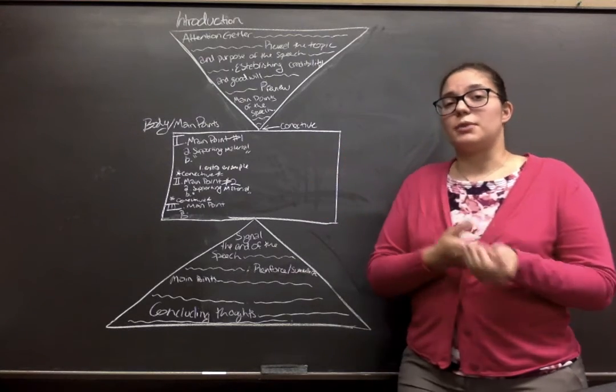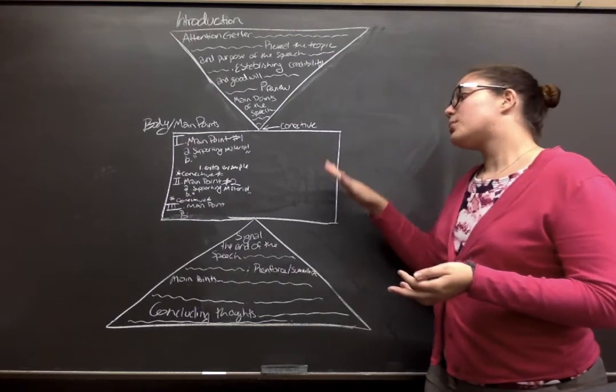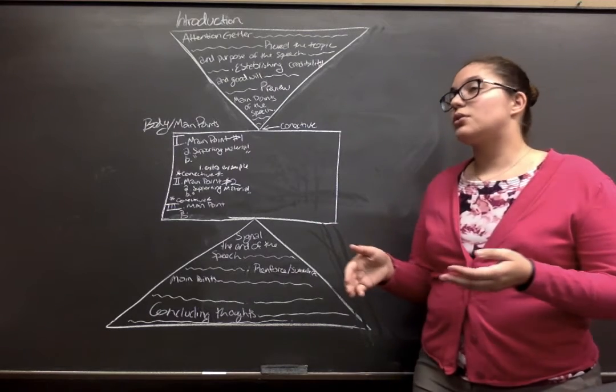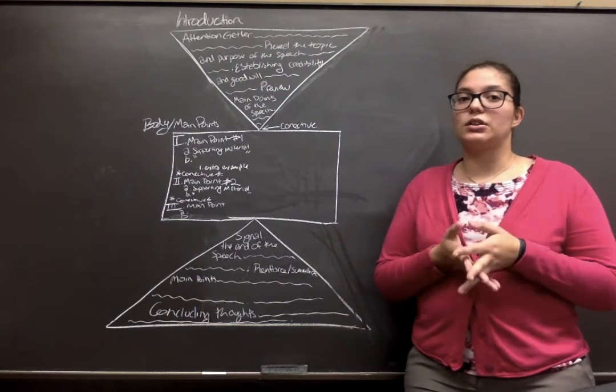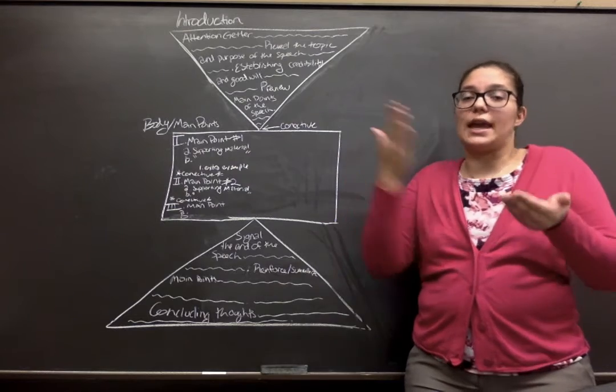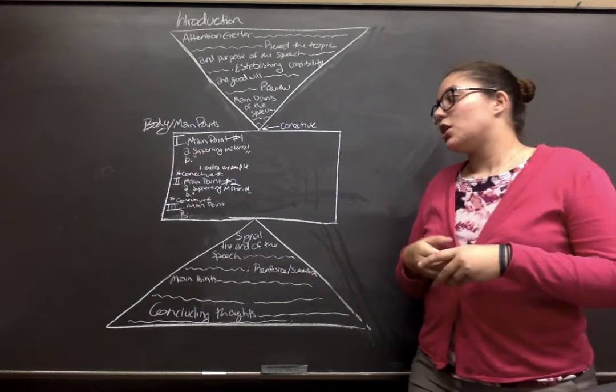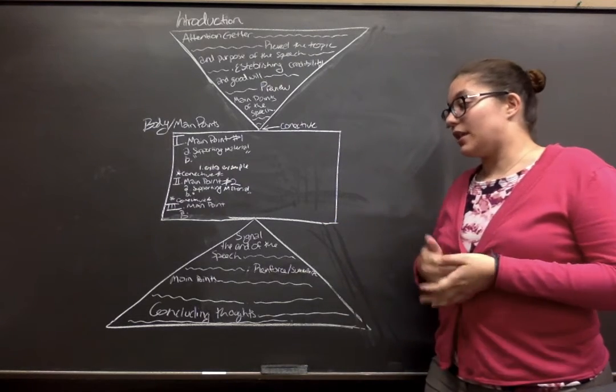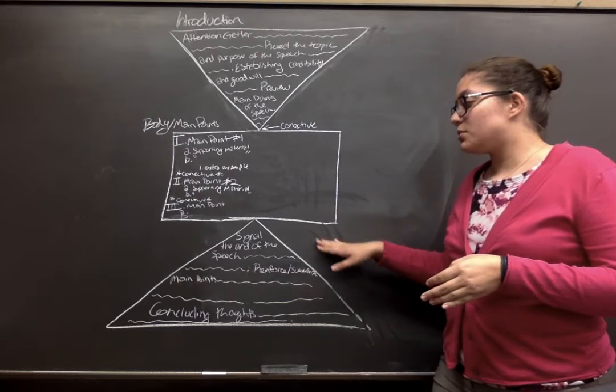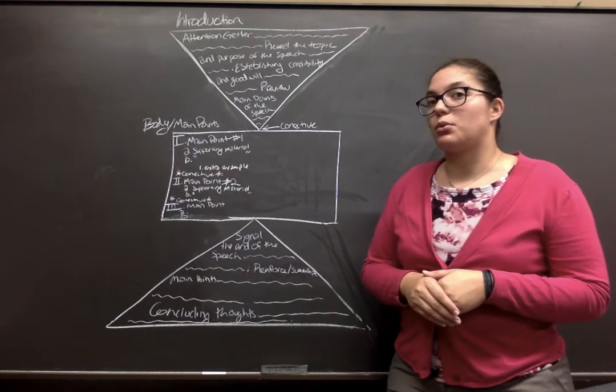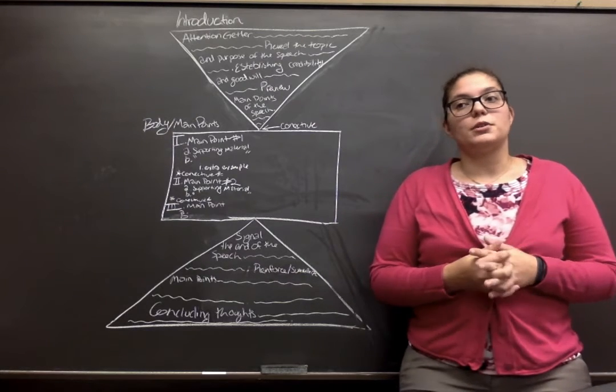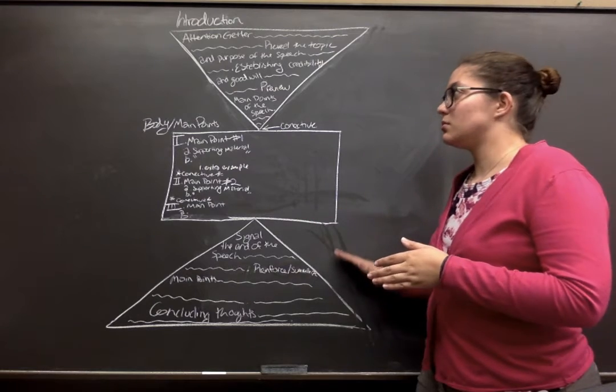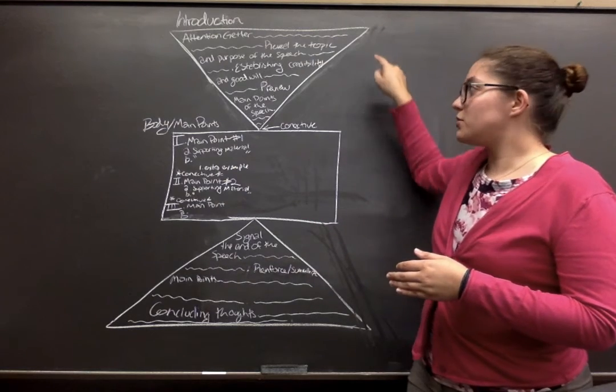After we've talked about the body and the main points, we're going to go to your conclusion. So the way you start your conclusion is first you've got to signal the end of the speech. Once you have done that, you want to reinforce or summarize your main points. So you want to work your introduction backwards pretty much.